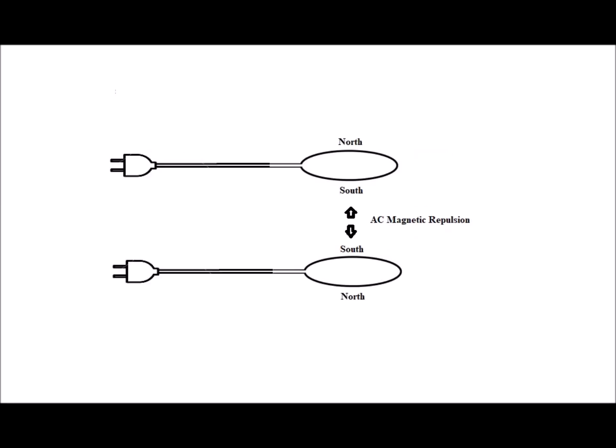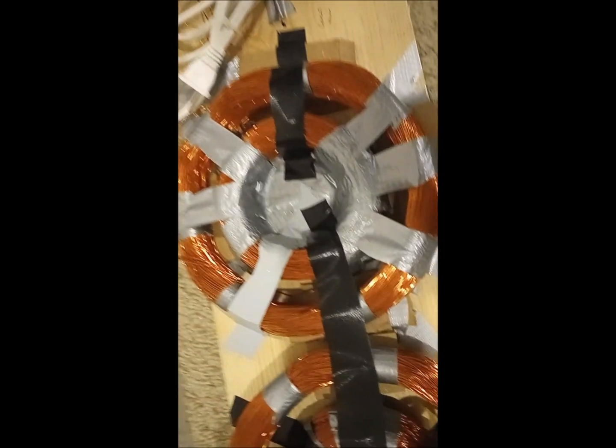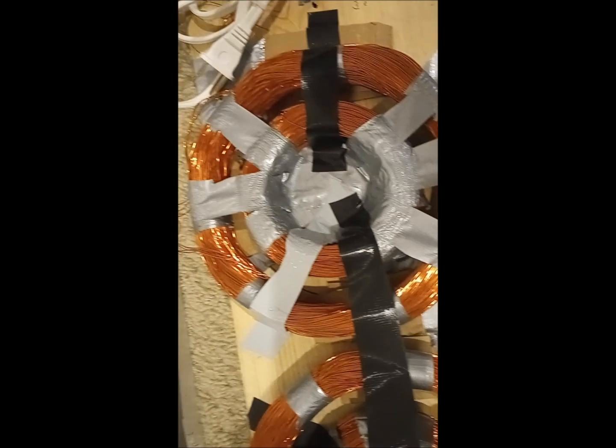Typically the coils will repel each other in this orientation as the pole of the smaller coil facing downward will be the same as the pole of the larger coil facing upwards. Hence the coils will have to be secured with tape or some other means prior to operation.